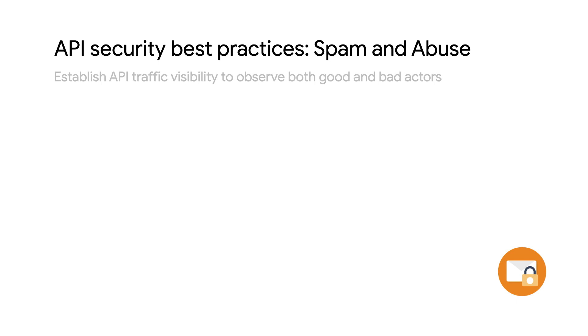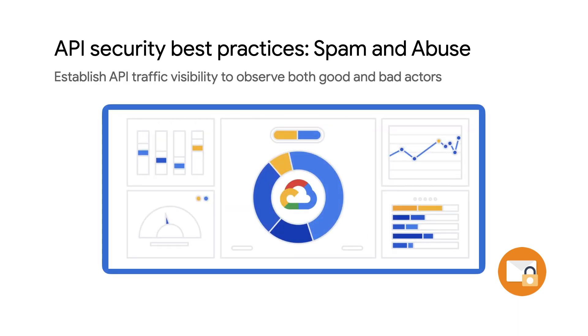Last but not least, let's talk about spam and abuse. A considerable amount of API traffic comes from automated actors that engage in credential stuffing, brute forcing, and content scraping. The most important thing to remember is that you can't secure your APIs against threats that you can't see. Establish API traffic visibility through an API management platform like Apigee, where you'll be able to observe and capitalize upon good, legitimate traffic, while also being able to identify and block bad actors.